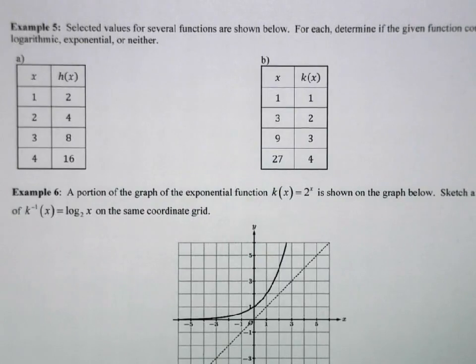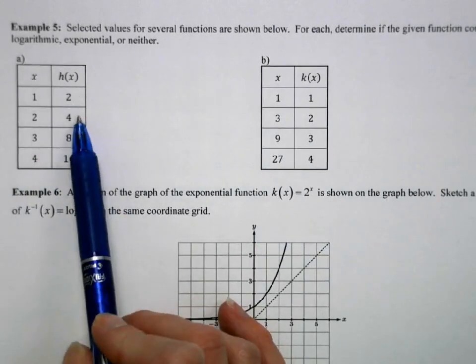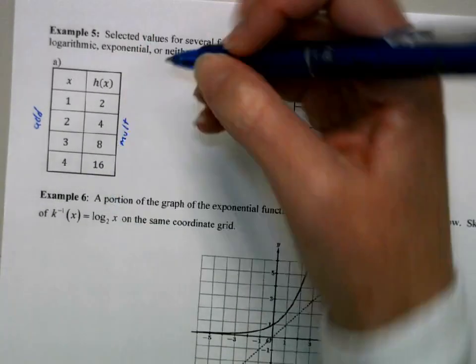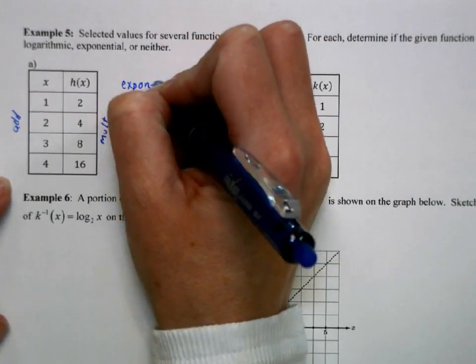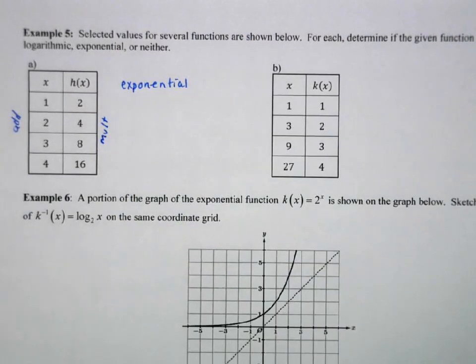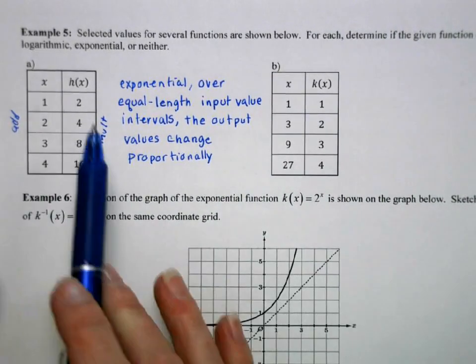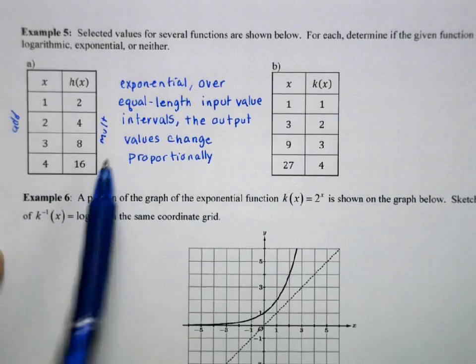Next we have two tables of values, and we're determining if they're logarithmic, exponential, or neither. So we saw earlier in unit 2, if my input values are at equal length intervals, and we're multiplying to get from term to term here. So if on this side we're adding, and on this side we're multiplying, that means we have an exponential function. And then our justification: over equal length input value intervals, and that part's important, because if these aren't equal length and these are multiplying, that is not exponential. But since these are equal length input values, the output values change proportionally.